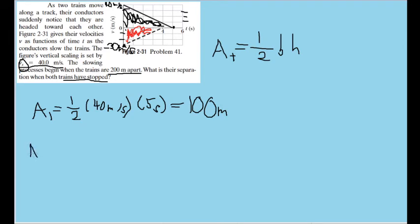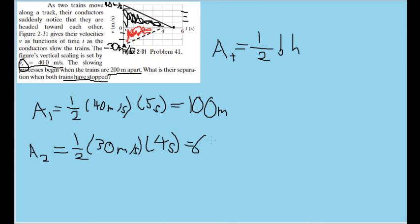Now let's find the area of the second triangle, or the distance that the second train travels, which is equal to one half times 30 meters per second times its base, which here is going to be four seconds, which is equal to 60 meters. So one train travels 100 meters, and another train travels 60 meters.